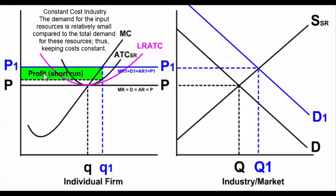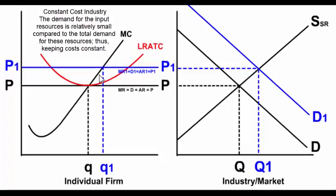Economic profits go from zero to positive profits where the price is above the average total cost at the profit maximizing quantity. As firms earn economic profits in the short run — because price is greater than average total cost at the profit maximizing quantity — more firms will enter the industry.